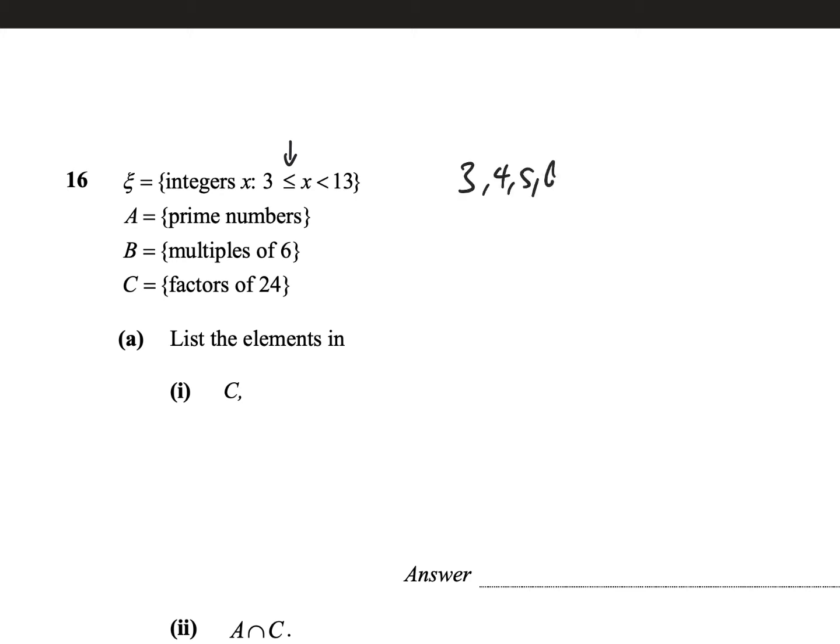So it's 3, 4, 5, 6, 7, 8, 9, 10, 11, 12. And we don't include 13 because this is strictly less than. So we can say that the universal set, zai, has all these elements.